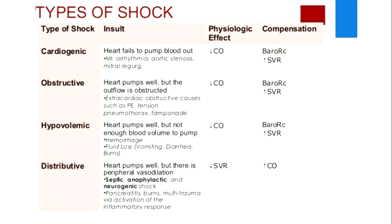These types are organized in a table. Cardiogenic: the heart fails to pump blood out — myocardial infarction, arrhythmia, aortic stenosis, mitral regurgitation. Obstructive: the heart pumps well but output is obstructed — pulmonary embolism, tension pneumothorax, cardiac tamponade. Hypovolemic: the heart pumps well but there is not enough blood volume — hemorrhage, fluid loss, vomiting, diarrhea, burns. Distributive: the heart pumps well but there is peripheral vasodilation — septic, anaphylactic, and neurogenic shocks.